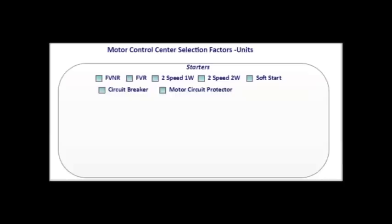Now we'll take a look at the selection factors for motor control center units that are starters. We need to know whether it's going to be a full voltage non-reversing or a full voltage reversing, if it's a 2-speed 1-winding or 2-speed 2-winding, or if a soft start is required. We also need to know what type of disconnect the customer wants — circuit breaker, motor circuit protector, or fusible switch — and the size of the trip or fuse clip required. Additionally, we need the horsepower or NEMA size, the motor voltage, and the control voltage.